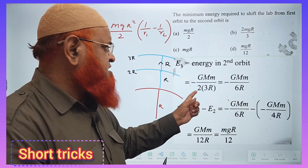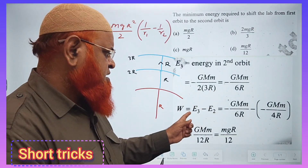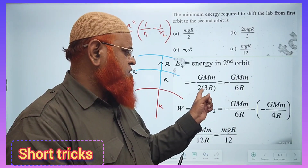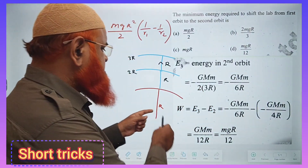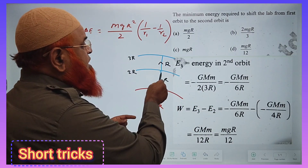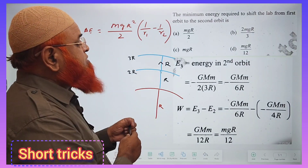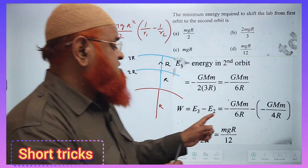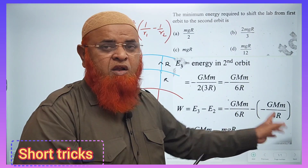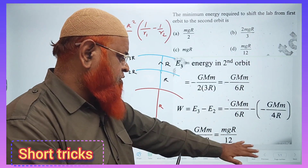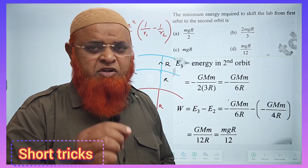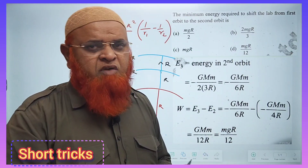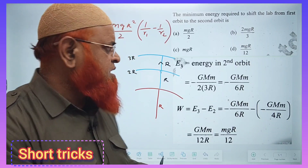For the second orbit and third orbit — second orbit means you have to take, for example, R from R plus R to R, it becomes 2R. And third orbit means it becomes 3R. You subtract 3R and 2R — that is the general process — and at last you get MGR by 12. This is the textbook method.